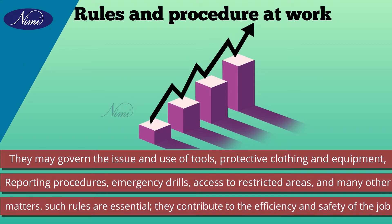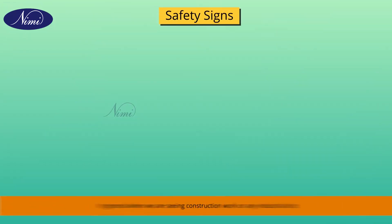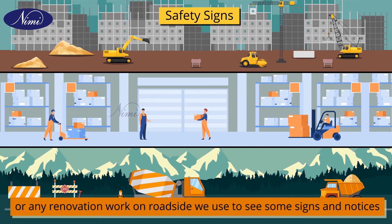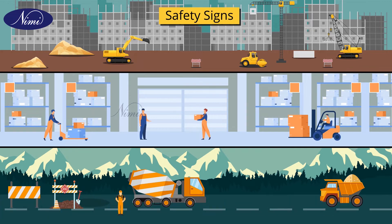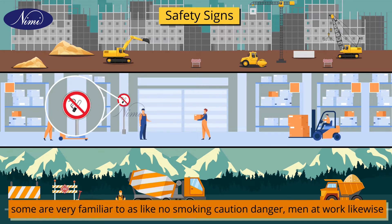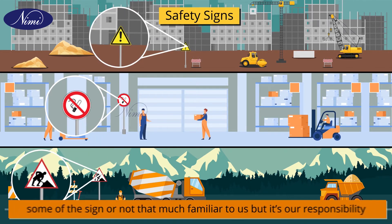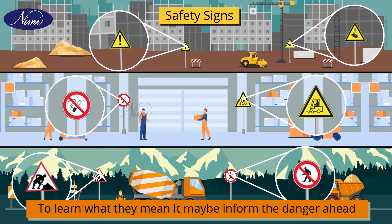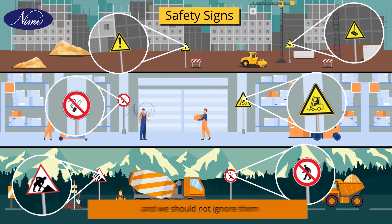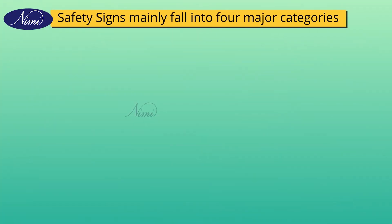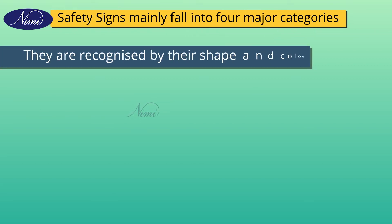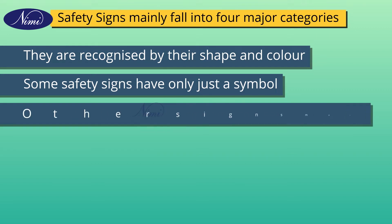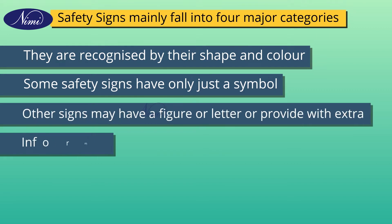Next we are going to see safety signs. In general, when we see any construction works, industrial sites, or road works, we see some signs and notices. Some are familiar to us like no smoking, caution, danger, men at work. Some signs are not that familiar, but it is our responsibility to learn what they mean — they may inform of danger ahead and we should not ignore them. The safety signs fall into four major categories, recognized by special shape and colors. Some have only symbols; others may have figures or letters with extra information. The four categories are prohibitory signs, mandatory signs, warning signs, and information signs. Each sign has a specific shape and color that remains consistent worldwide as per safety regulations.